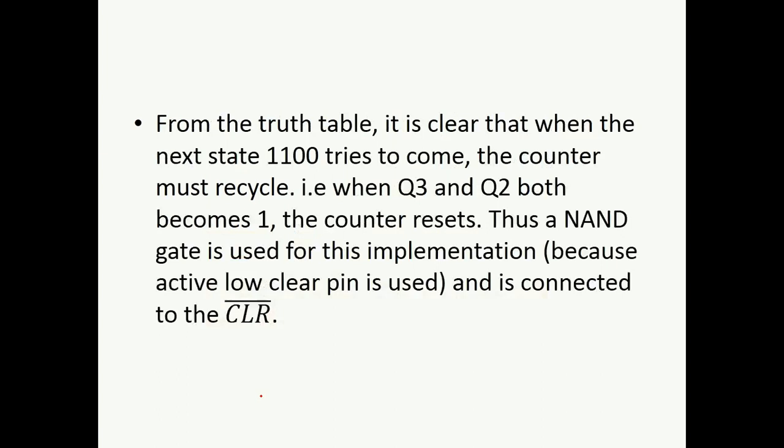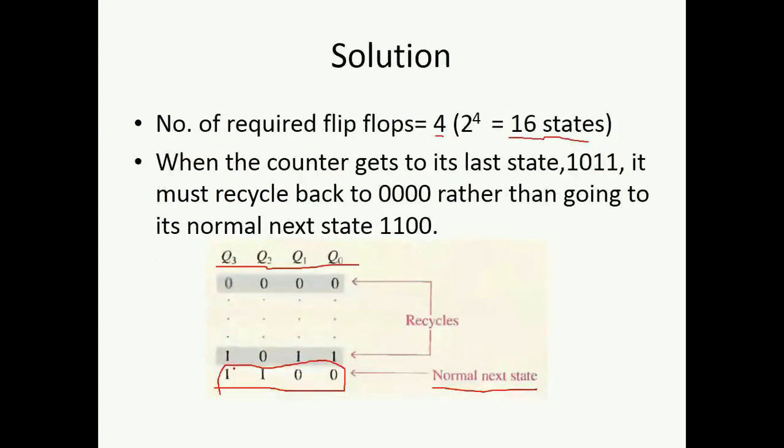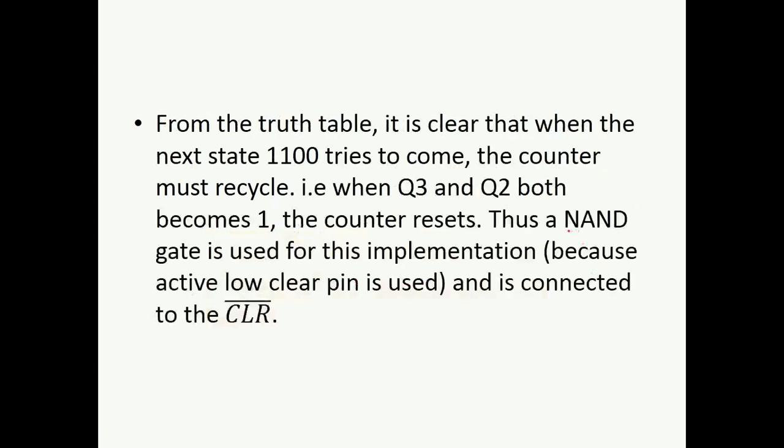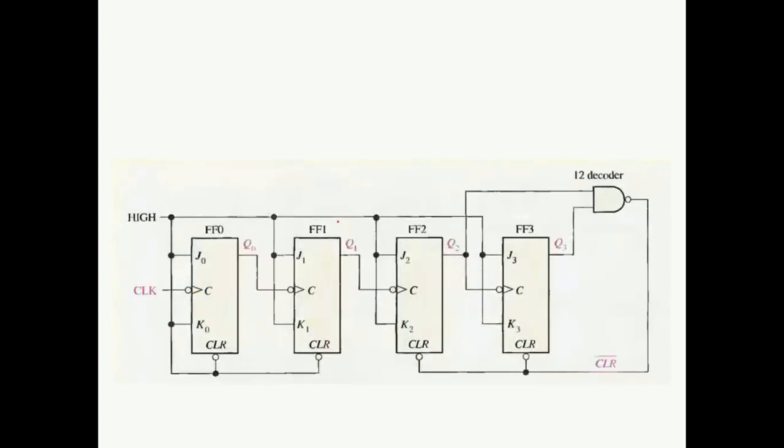What about the connections? As per the truth table, whenever Q3 and Q2 become equal to 11, our counter must reset. When Q3 and Q2 are 11, our counter must reset its value. That means Q2 and Q3 must be connected with a NAND gate. The question is why NAND gate? Because we have to give this signal to the clear pin, and this is a clear bar pin which is active low. We want to give a 0 signal. When Q3 and Q2 are 11, a NAND gate output will be 0.